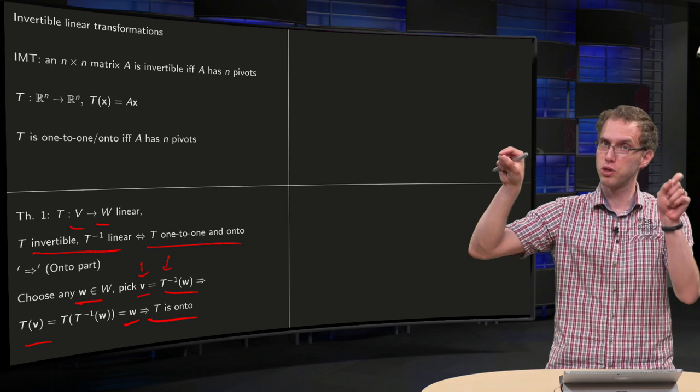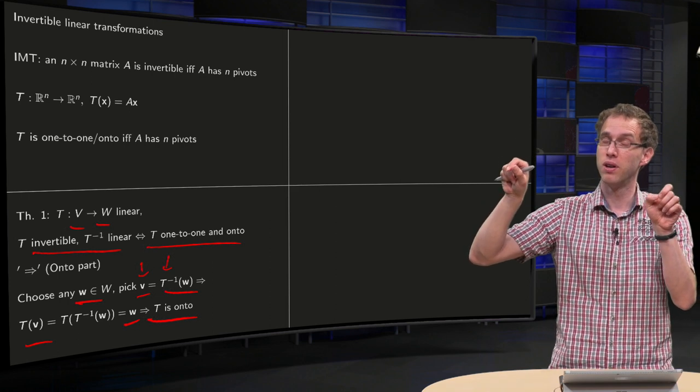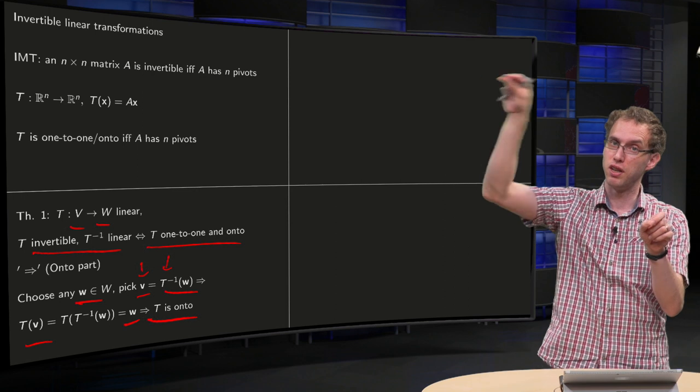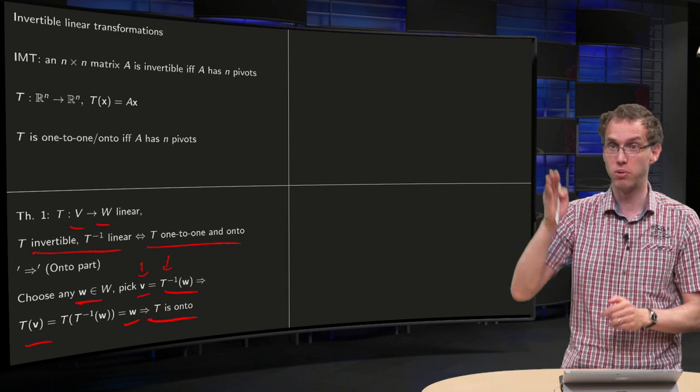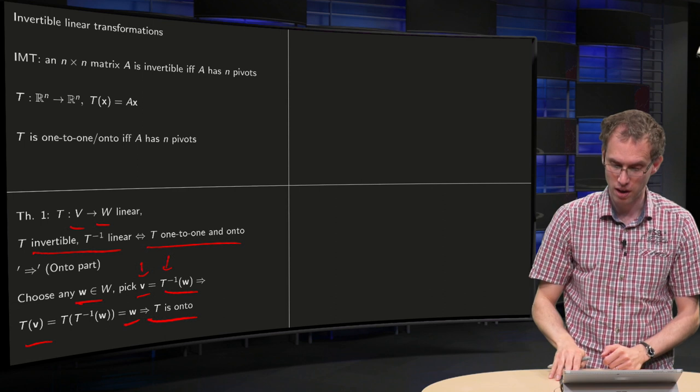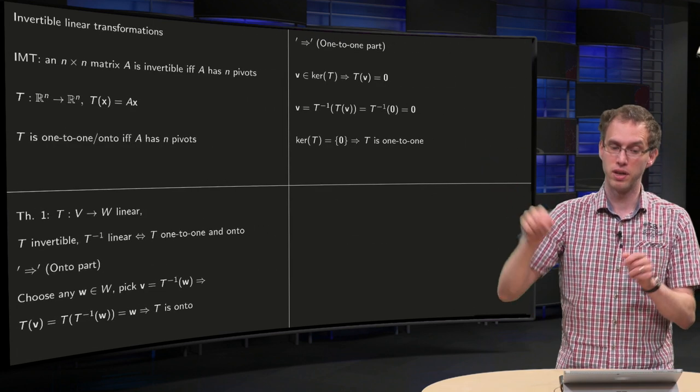You have your w, you look for a v in your domain, so you apply a T inverse to find it, and there you are. You can do that for any w, so you can reach any w in your codomain.